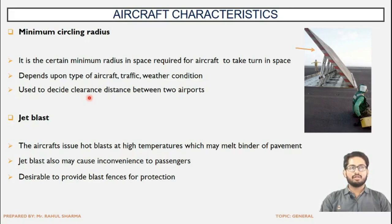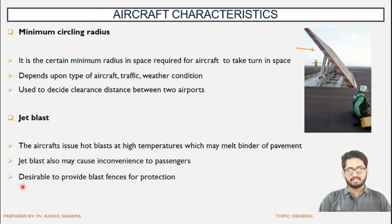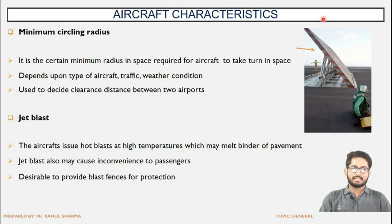Next is jet blast, which we have already studied. The aircraft issues hot blast and high temperature exhaust which might hinder movement. The hot exhaust gases removed from the aircraft can have a deteriorating impact. Jet blast also causes inconvenience to passengers. It is desirable to provide blast fences for protection — these are structures of metal or concrete provided to divert the hot exhaust gases into the air and make the pavement free of those exhaust gases.